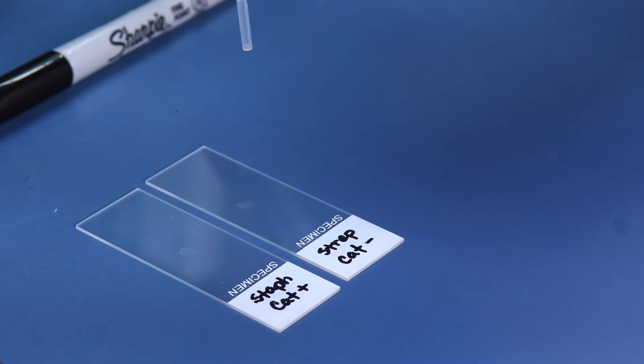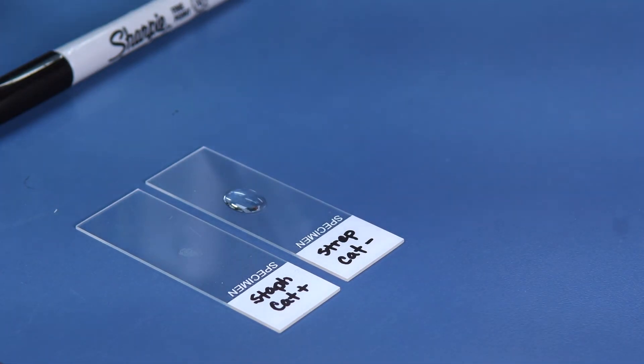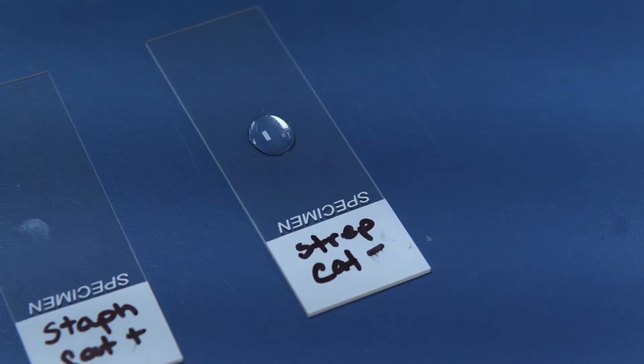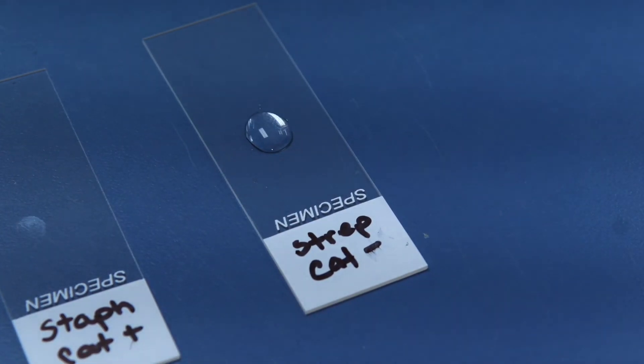Using a dropper or pipette, release 2-3 drops of 3% hydrogen peroxide onto the Streptococcus slide without mixing. Note the reaction. Because it is catalase negative, there will be no bubbling effect.